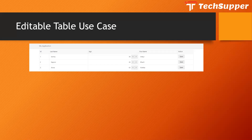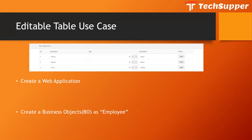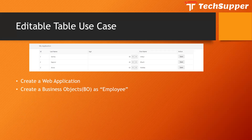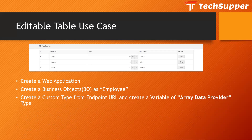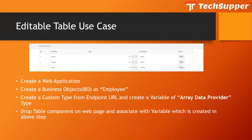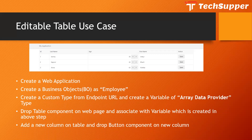In Visual Builder, we are going to create a web application first, then create a business object for employee, create a custom type from an endpoint URL, and then create a variable of array data provider. We will drop a table component on our web page, associate it with the variable, add a new column, drop a button component on that column, and use that button to save the corresponding record into the business object.